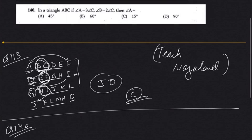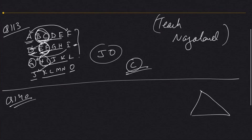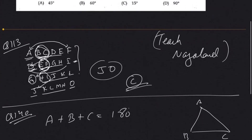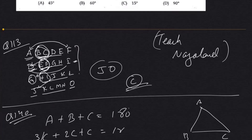Continuing with question number 140: in triangle ABC, angle A = 3 times angle C, and angle B = 2 times angle C. Find angle A. From class 7–8, we know the theorem that the sum of angles in a triangle equals 180 degrees. No need to write down angles formally since this is an objective question — just work through the solution.